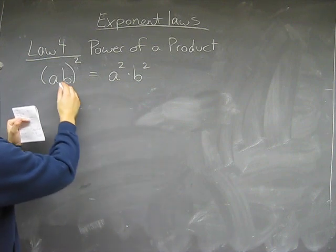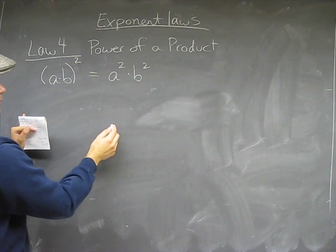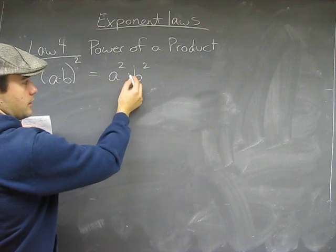A and B in brackets, so this is two terms, a times b to the power of two. That equals a squared times b squared.